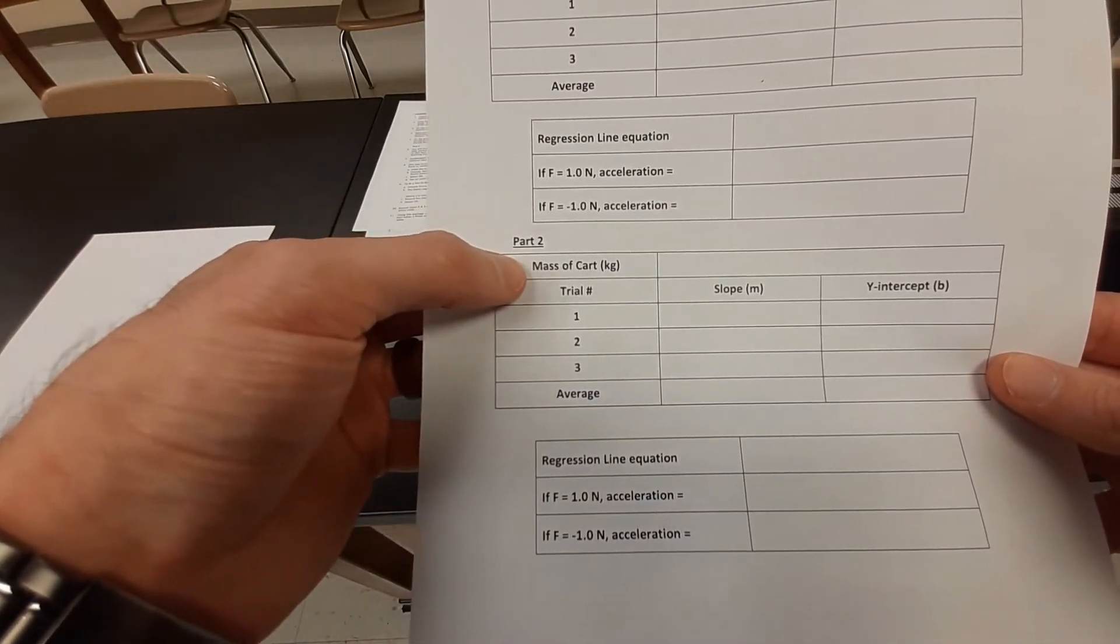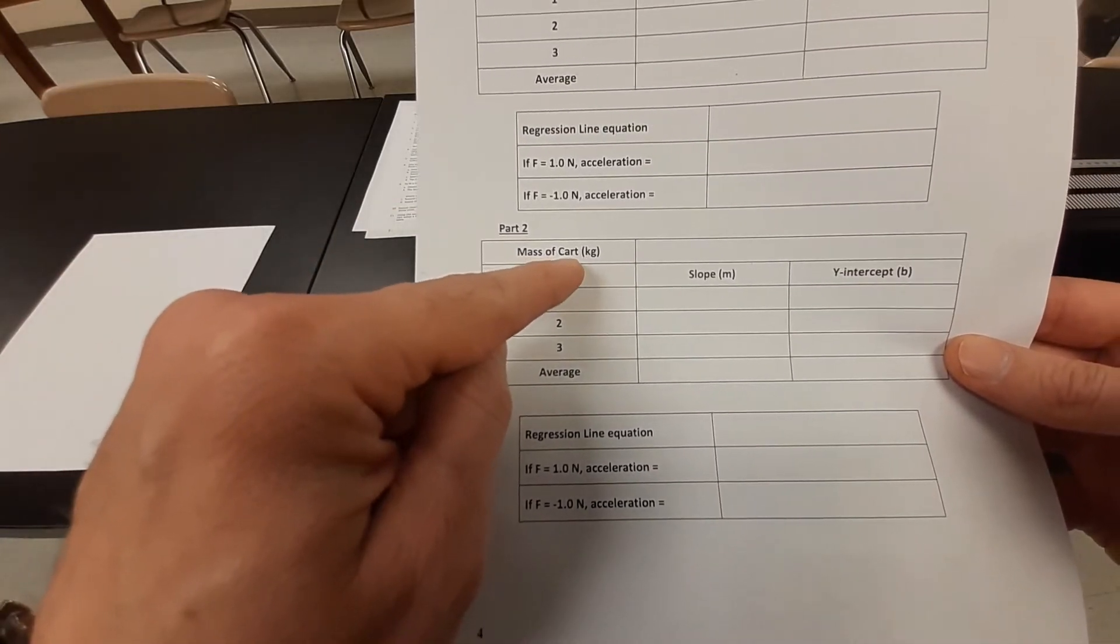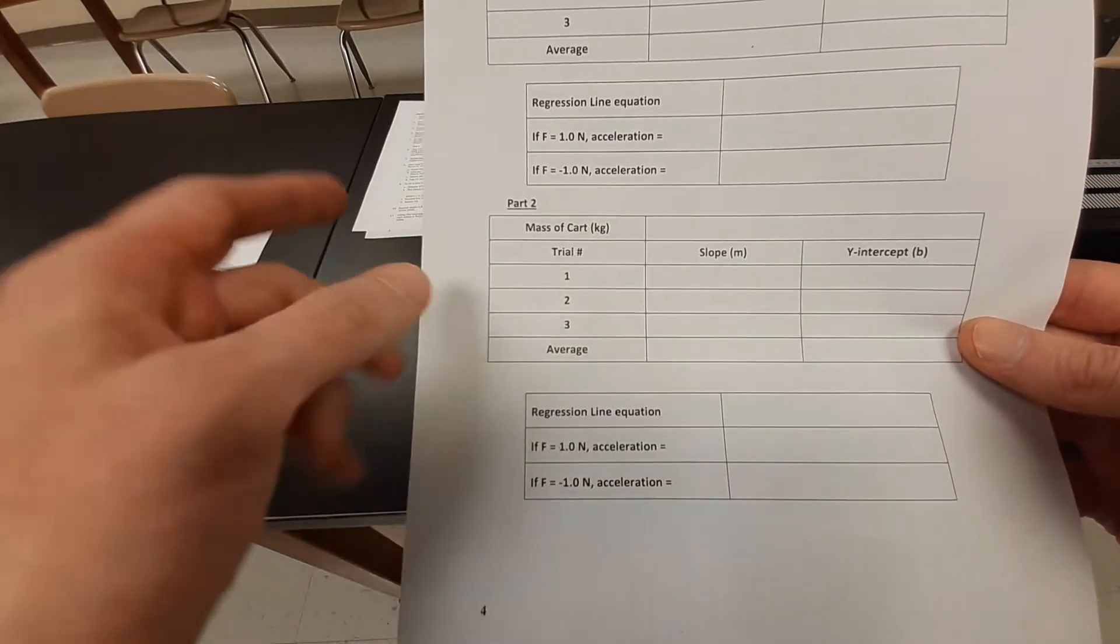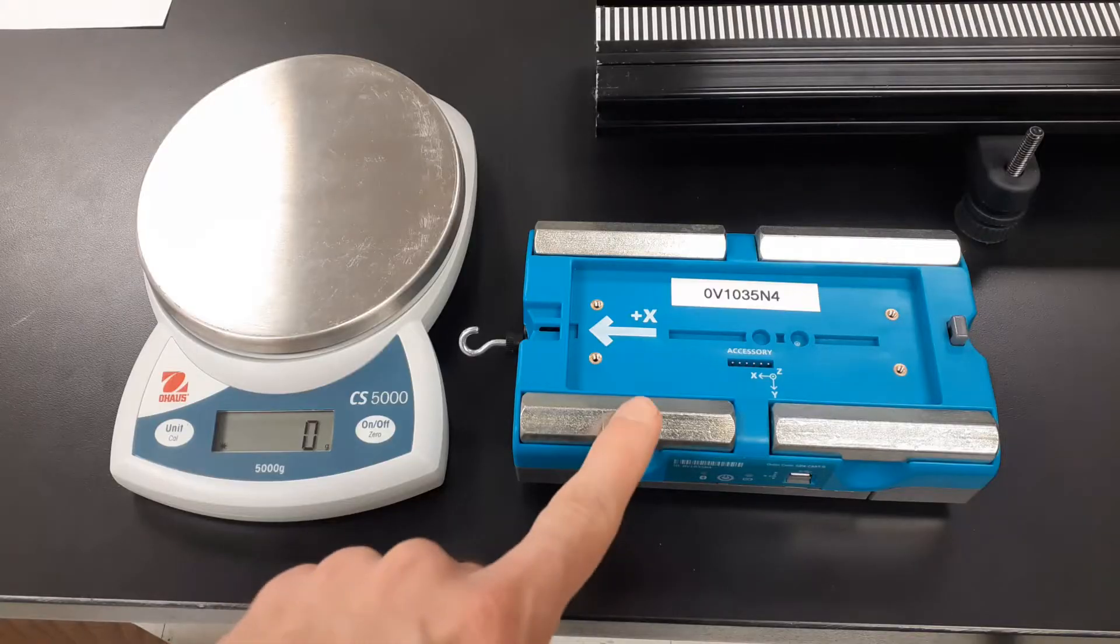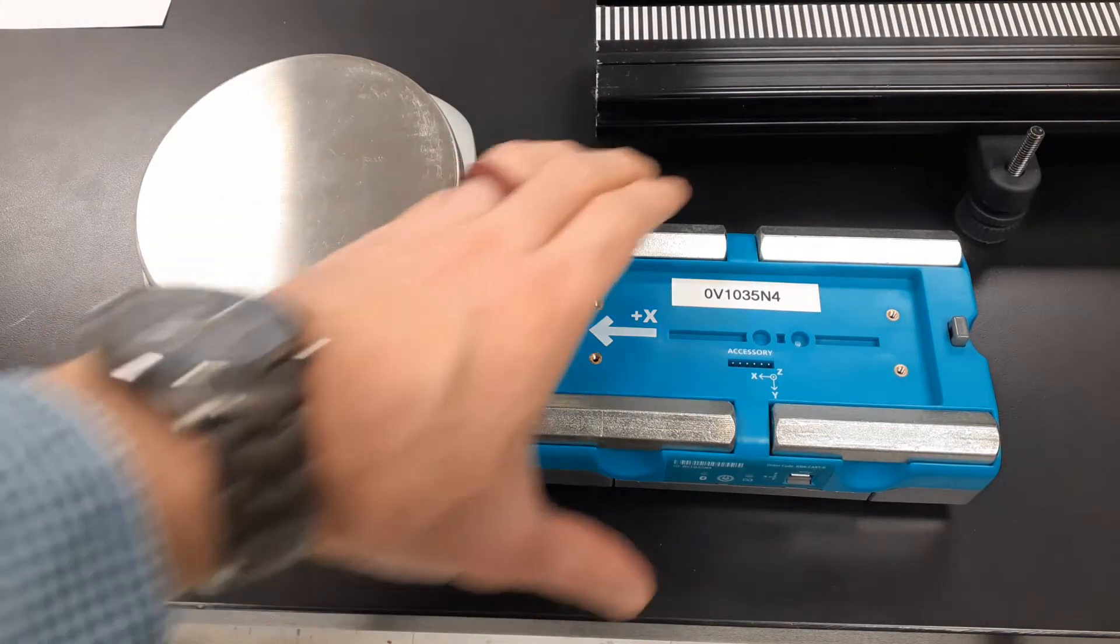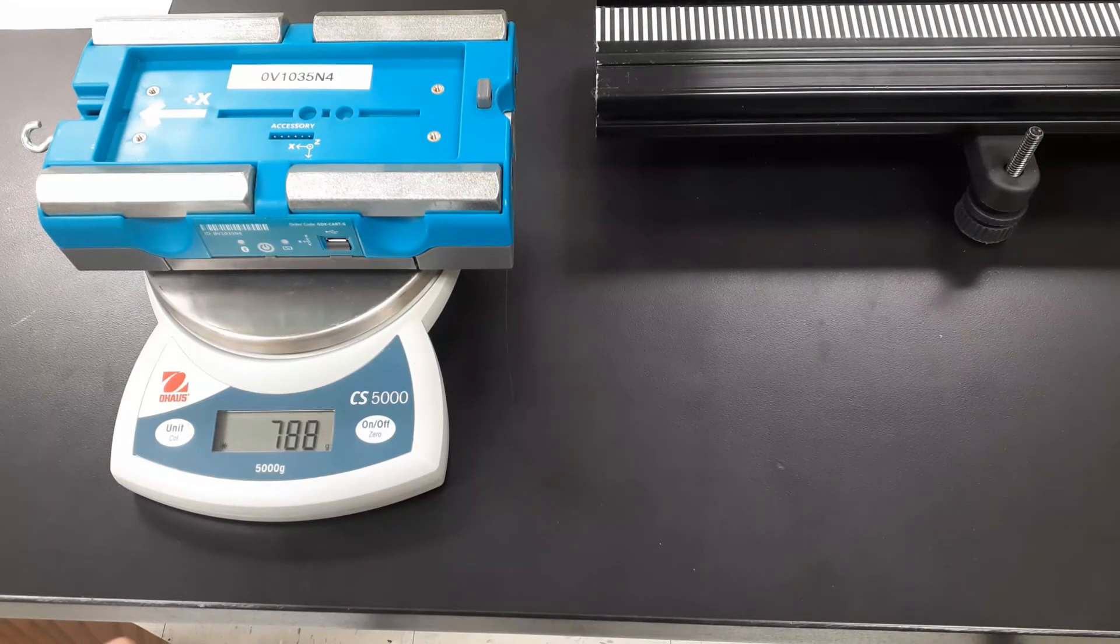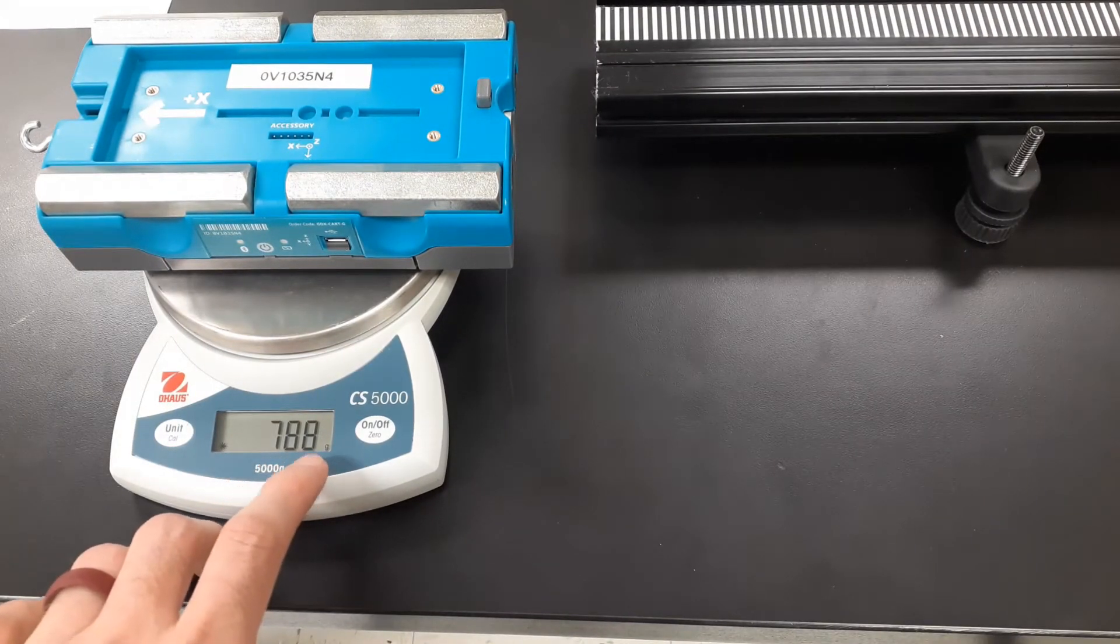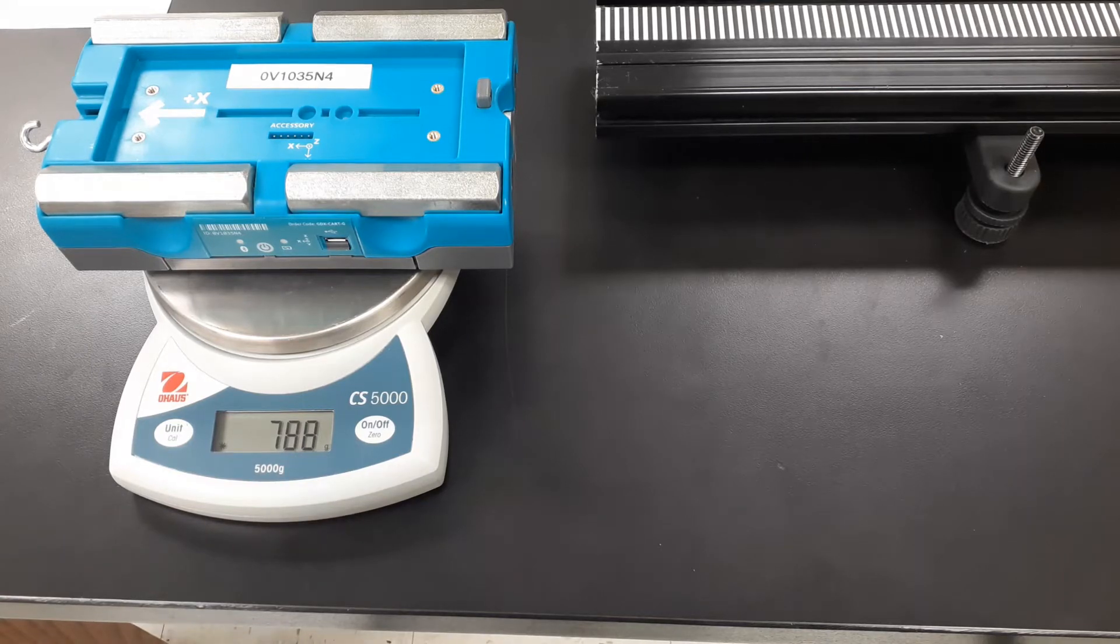So now we're going to set this up for part two. The only difference on part two is we're going to add those masses to the cart. So I'm going to set this up and measure the cart with those additional masses. I chose to add all four additional masses to my car. Now we're going to take this, set it on the scale, and now we have 788 grams. Again, just like part one, make sure you convert those grams into newtons, but 788 grams for the new mass on part two.